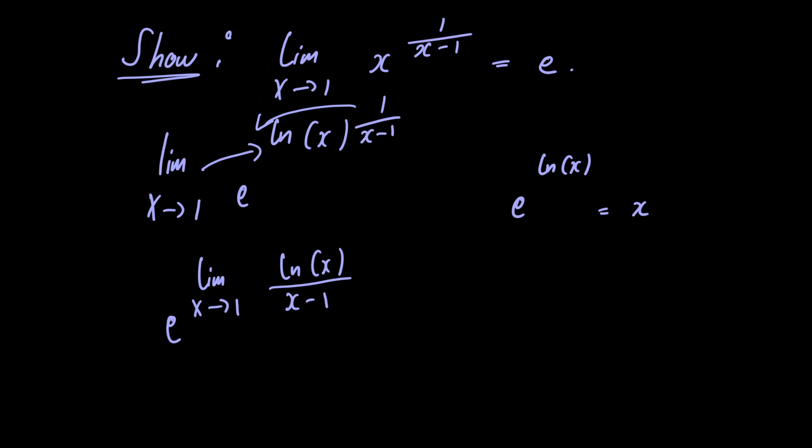Now if we were to just let x tend to 1 in the numerator we would have the natural logarithm of 1 which is equal to 0, and in the denominator we would just have 1 minus 1 which is also just equal to 0.